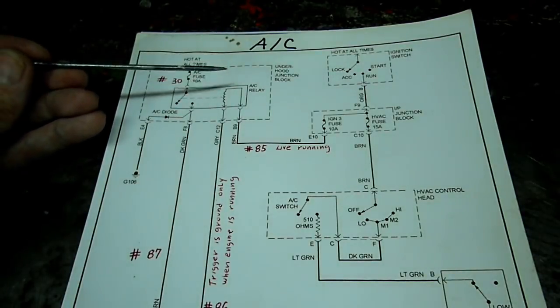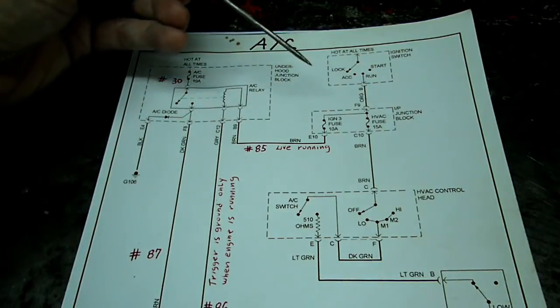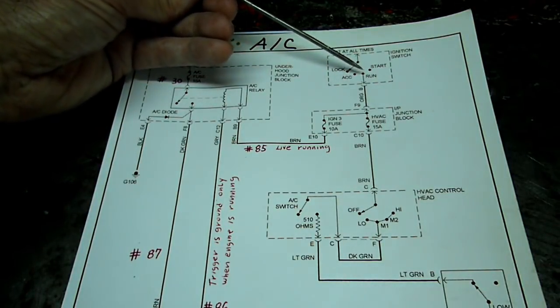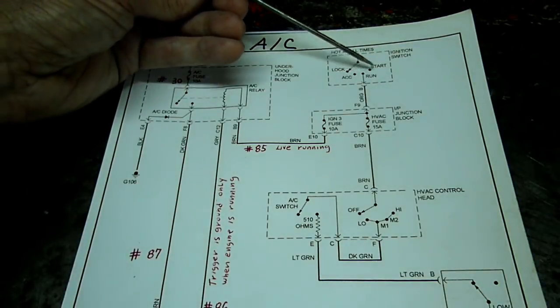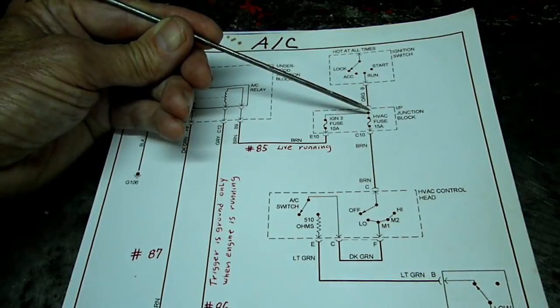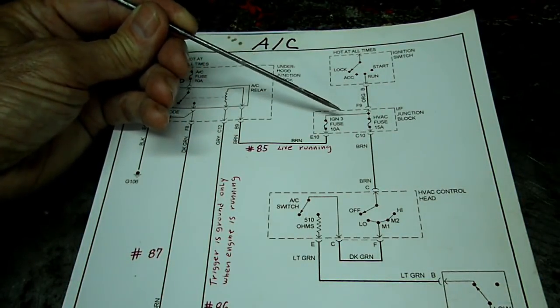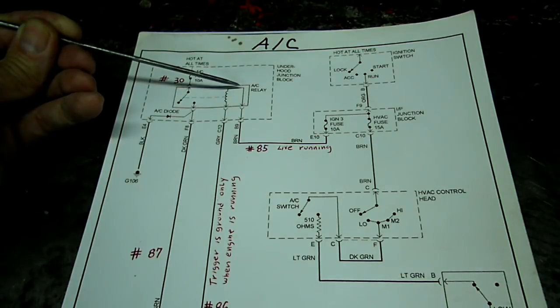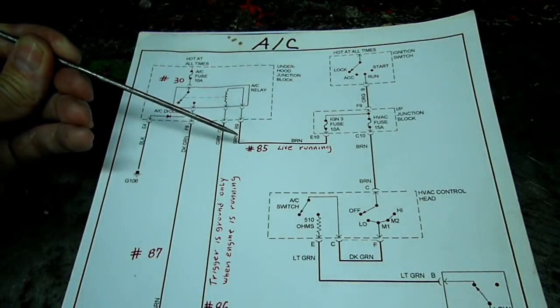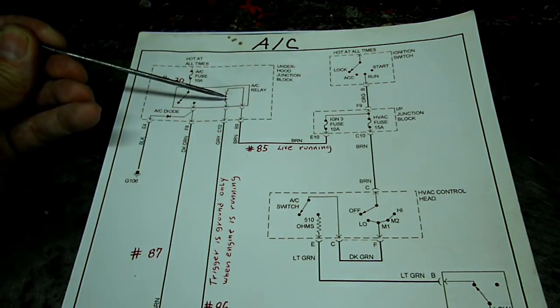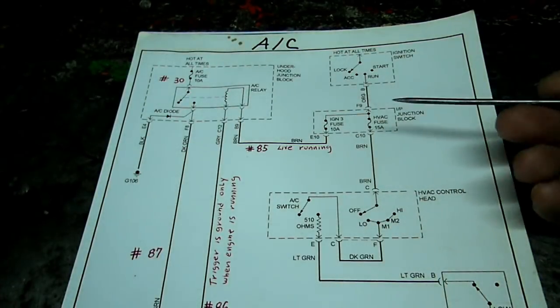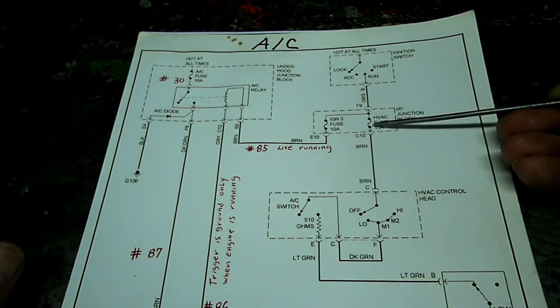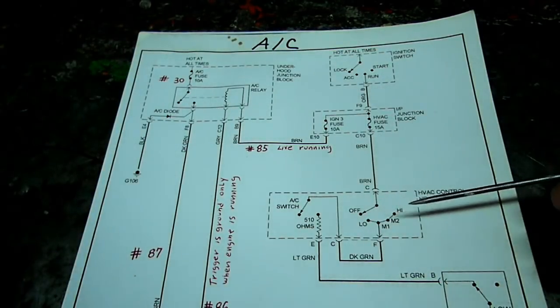Now what else do we have in the AC relay? We have the voltage coming from the ignition switch, and it is only hot in the run position. Once the ignition switch sends voltage down to the HVAC fuse and ignition 3 fuse, it goes through the ignition 3 fuse out to the AC relay. So that power source right there is going to energize the coil right there. Now we've got voltage coming down through the HVAC fuse, 15 amp fuse right here. You can see in the junction block, and it comes down to the control head.